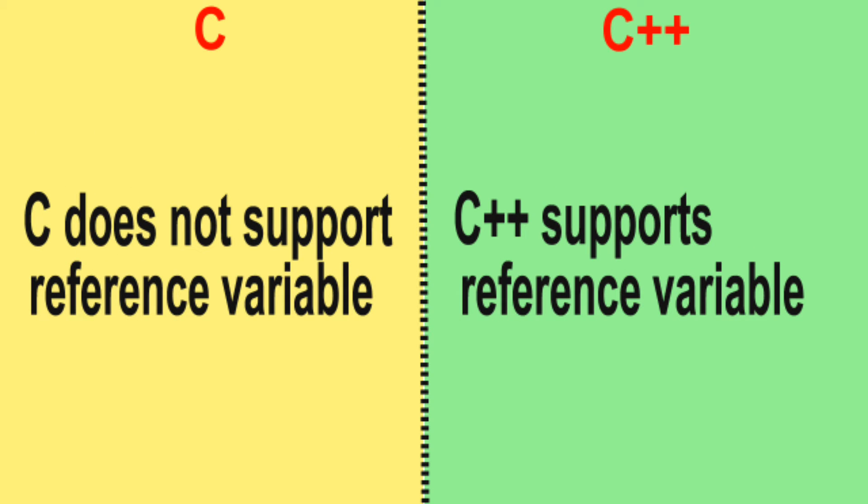Difference number 8: C does not support reference variables. C++ supports reference variables.